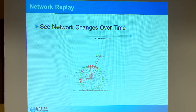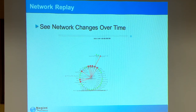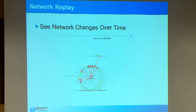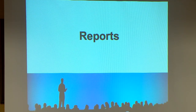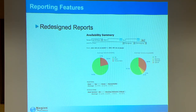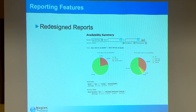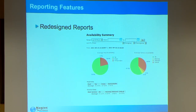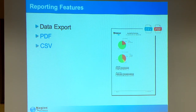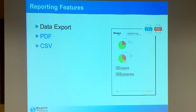Our network replay — I'll show you that in real time — allows you to basically go back in time and see how the network changed, how hosts went up or down, and how network status changed over time. We redesigned the reports to make them easier to understand, toned them down, and made them easier for everyone. The Nagios Core reports are still available under the hood. We also added data export like CSV and PDF — a lot of people needed PDF reports for management or incident response.